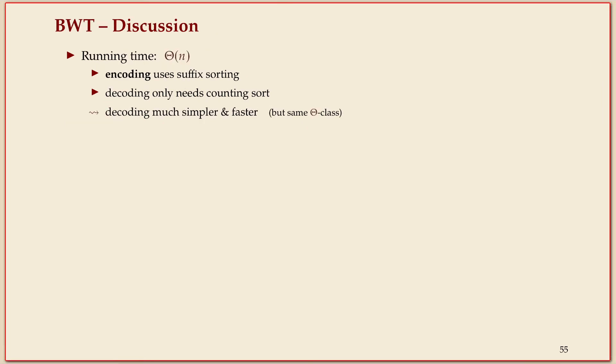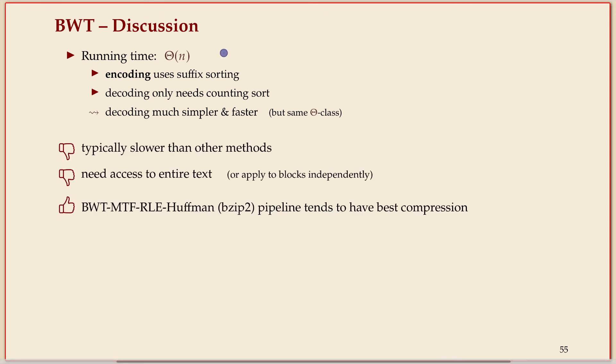That's the BWT. We've seen decoding is much easier - it doesn't need fancy suffix sorting, just counting sort and following these imaginary pointers. Both are overall linear time if you look at the theta class. It's typically a bit slower than other methods, but computers have become fast enough that it's very competitive. It doesn't need access to the entire text, so it can be used in a streaming fashion if you apply it to blocks - that's the bzip2 algorithm.